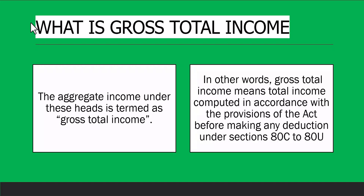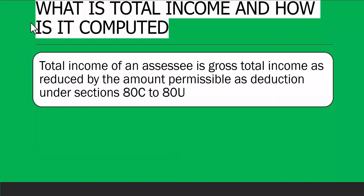Under Section 80C to 80U, there are many deductions allowed — for example, ELSS schemes under the income tax where you get a tax benefit up to Rs. 1,50,000 if you deposit money, take an insurance policy, or purchase a house. We will discuss all those deductions later.